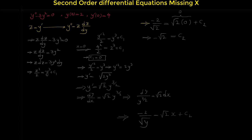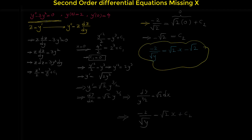So finally, we can write the solution as: negative 2 over square root of y equals square root of 2 times x minus square root of 2. This is the solution of this differential equation. I hope you enjoyed this video. If you liked it, please subscribe to my channel. Thank you for watching.